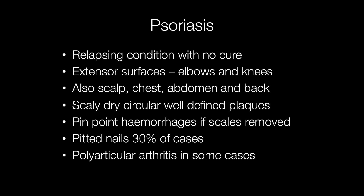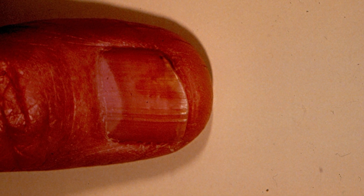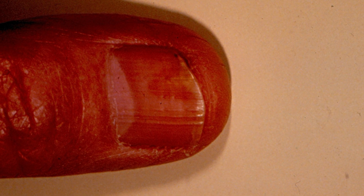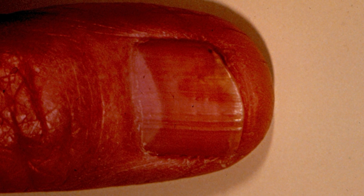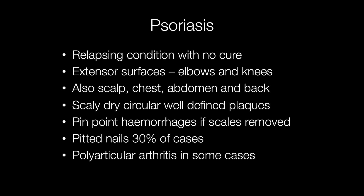Psoriasis is characterised by scaly dry circular well-defined plaques, and if the scales are removed this results in pinpoint haemorrhages. In around 30% of cases psoriasis also affects the nails, resulting in them becoming pitted. In some cases patients with psoriasis can develop arthritis involving multiple joints, called polyarticular arthritis.